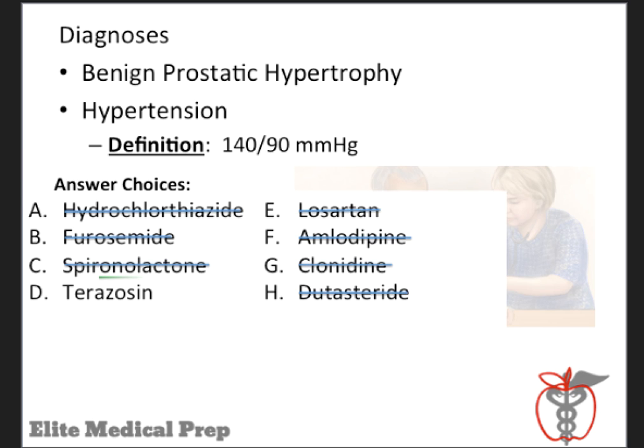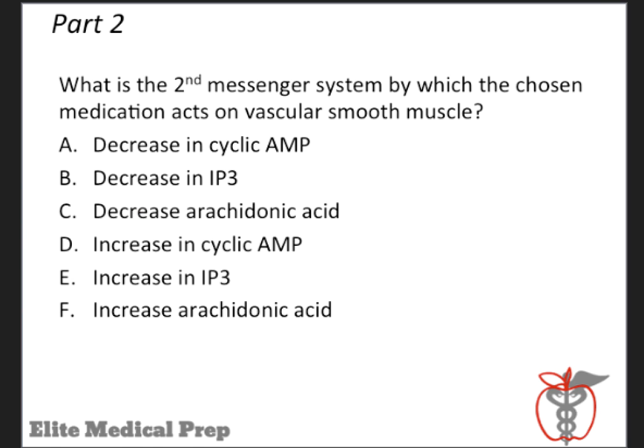Which choice is that? It's terazosin, choice D. That is the drug that treats both BPH and hypertension, and that sort of synergy is important clinically and also for the USMLE. The first part of our question was straightforward, but the USMLE rarely makes the question so easy.